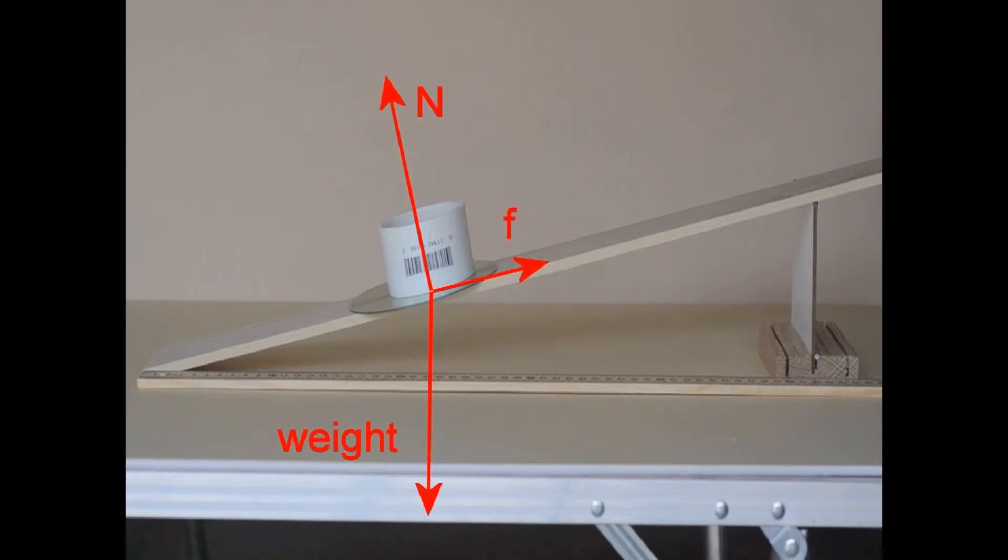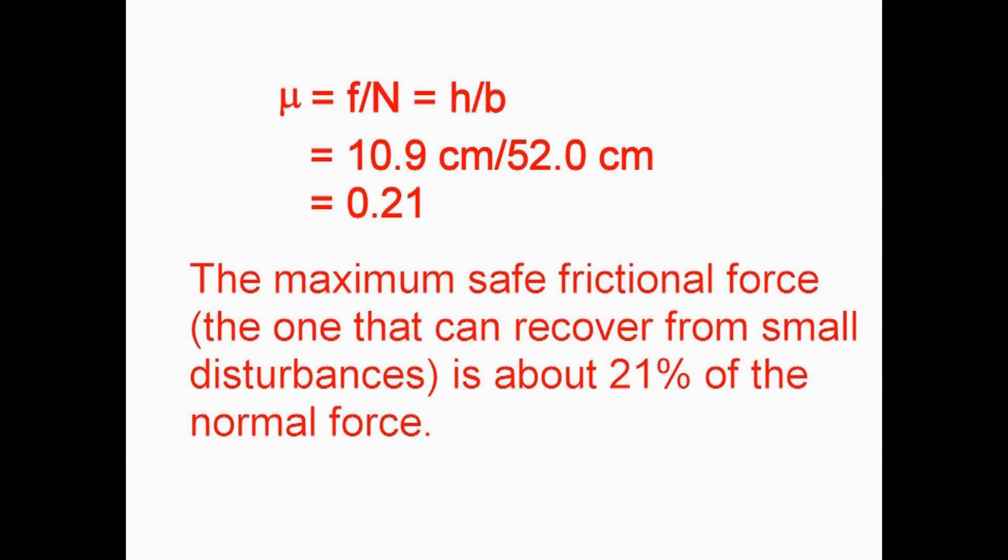The free body diagram for the object shows the force of gravity pulling down, the normal force from the ramp, and the frictional force parallel to the ramp. The normal and frictional forces are difficult to measure directly, but it's easy to measure the horizontal and vertical dimensions of the incline. Using similar triangles, the ratio of the frictional force to the normal force, which is also known as mu, the coefficient of friction, is equal to the ratio of height to base for the triangle formed by the ramp. The data for a ramp at the maximum safe angle which survived disturbances gives us a ratio of 0.21. We should be able to depend on a force of friction that is about 21 percent of the normal force, but no more than that.